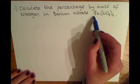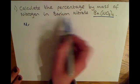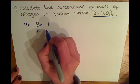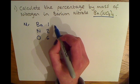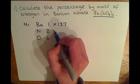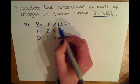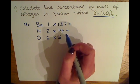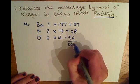First, we need to calculate the relative formula mass of barium nitrate. Looking at the atoms in the compound: barium — one of those; nitrogen — two of those; and oxygen — six of those. Using the periodic table, barium has a mass of 137, nitrogen has a mass of 14, and oxygen has a mass of 16. Adding all the masses up: 137 plus 28 plus 96 equals 261. So the Mr equals 261.